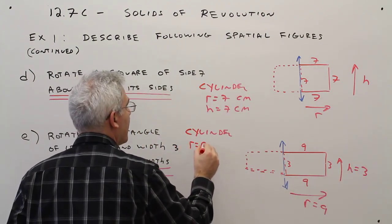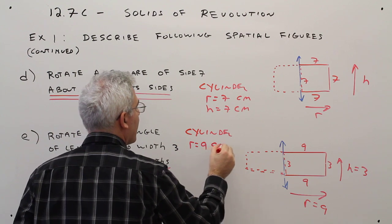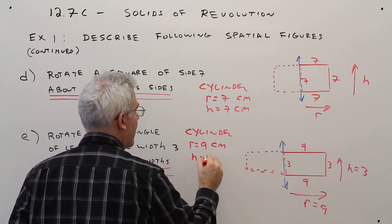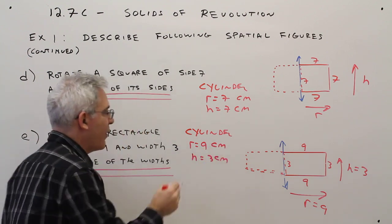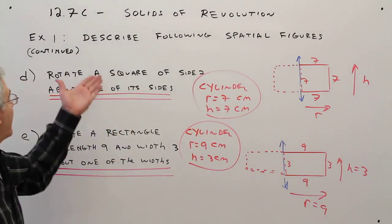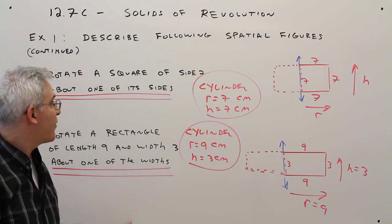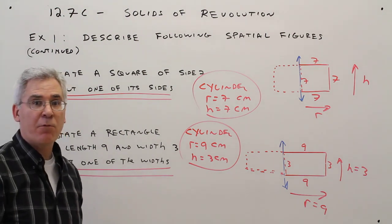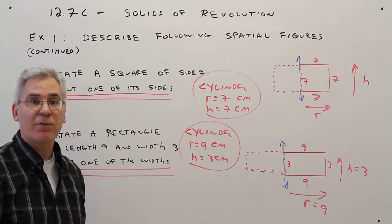So the radius equals 9 centimeters. Height equals 3 centimeters. And there you have it. Two more solids obtained by rotating a plane geometric figure.